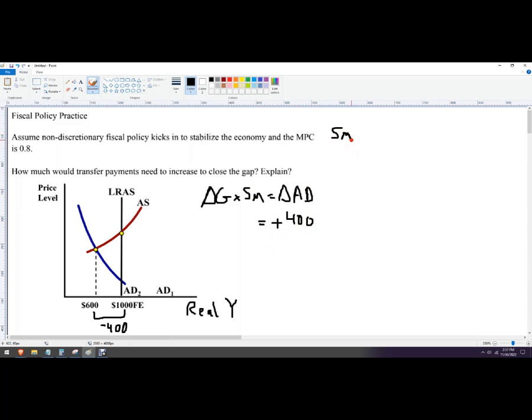The spending multiplier is 1 over 1 minus the MPC, or sometimes the simple spending multiplier. In simpler terms, if you just memorize it, it's 1 over the MPS. So either way, this is 1 minus 0.8 gives you 1 over 0.2.